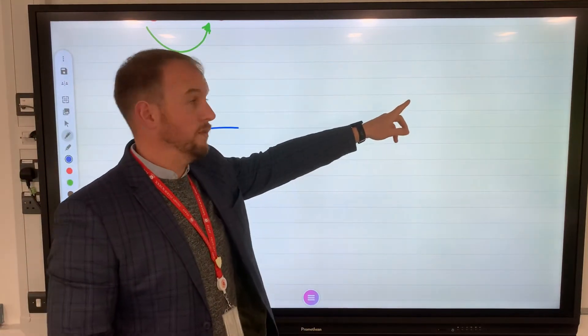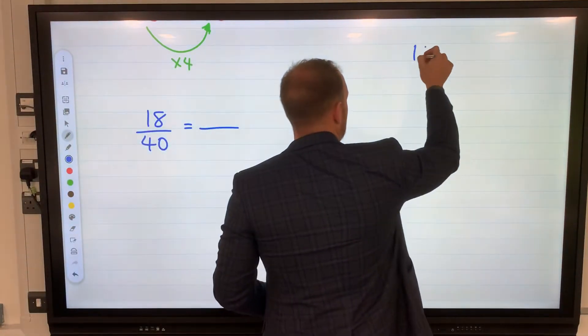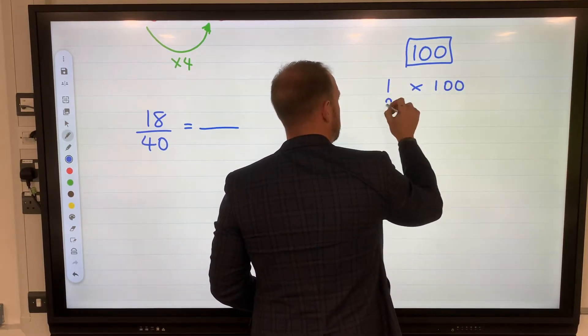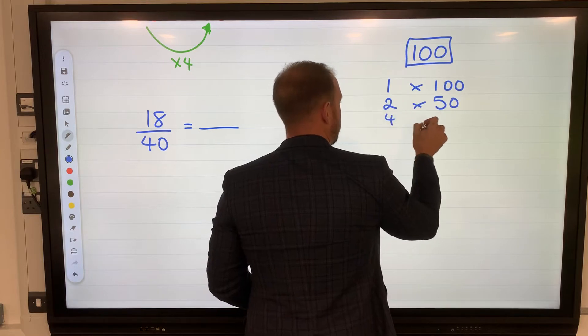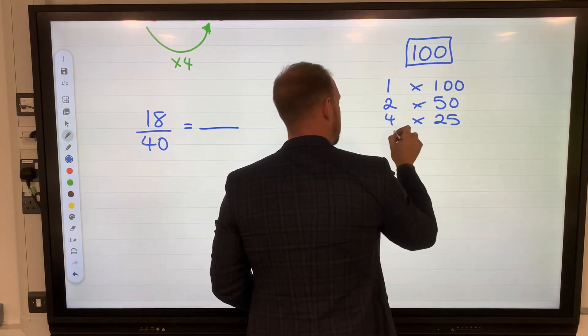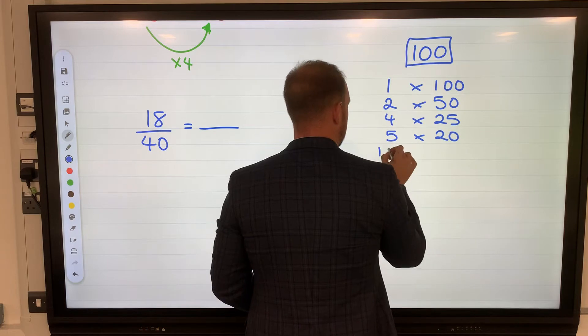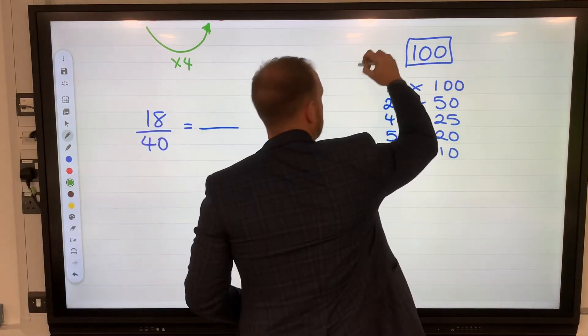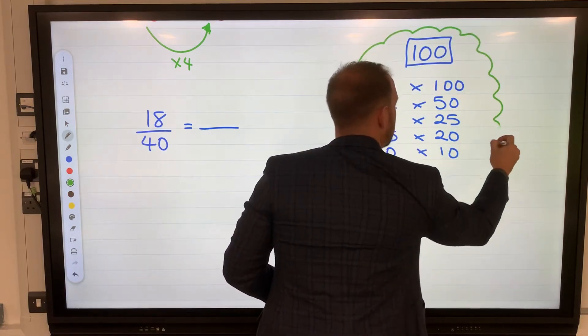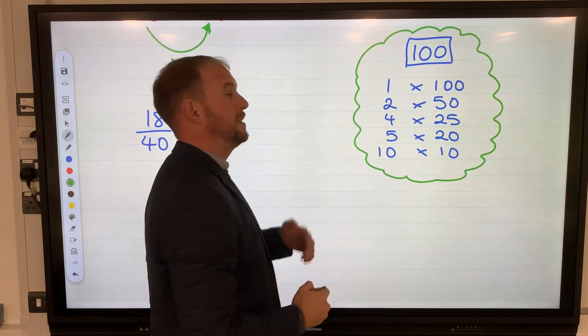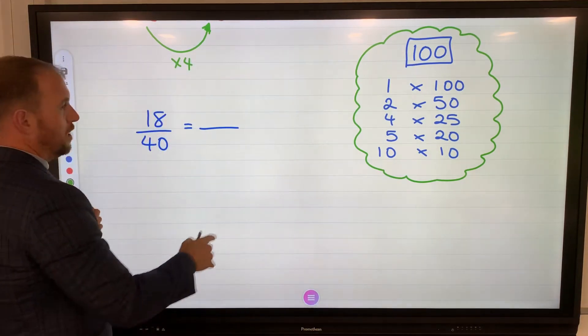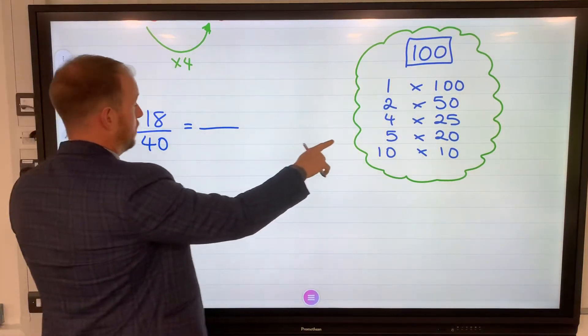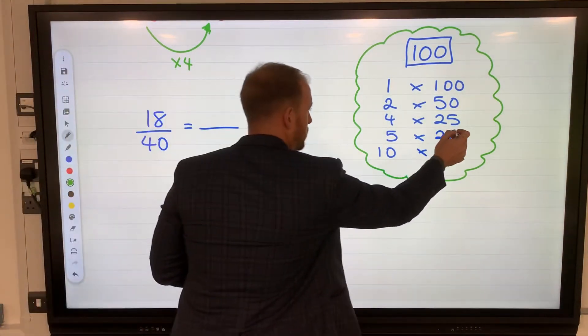I'm going to make a list of the factors of 100 over here with this method I call a horseshoe method. So with 100, you could have 1 times 100, 2 times 50, 4 times 25, 5 times 20, and 10 times 10. I'm just going to put a little cloud around those, because those we can use for expressing as a percentage. So looking at those there, I can easily make 40 into one of those numbers, but I'm going to pick the number 20.